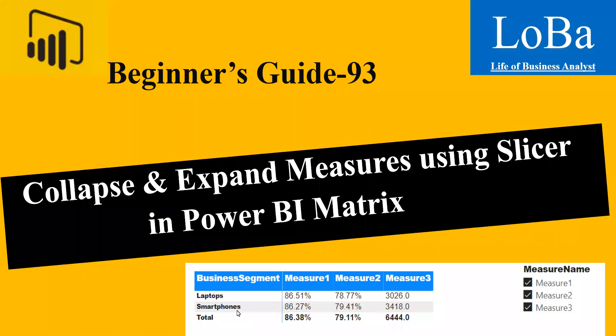Hello. In today's video, I'm going to explain how to collapse and expand measures based on user preference using a slicer. This trick will be very useful when we have several measures and want to provide the user the flexibility to select those measures of their choice. It should not take more than 15 minutes to build this feature. I will be using the SELECTEDVALUE function, SWITCH function, DATATABLE function, and FORMAT function in this example. Let's quickly go to Power BI and I'll show you how to create this feature.